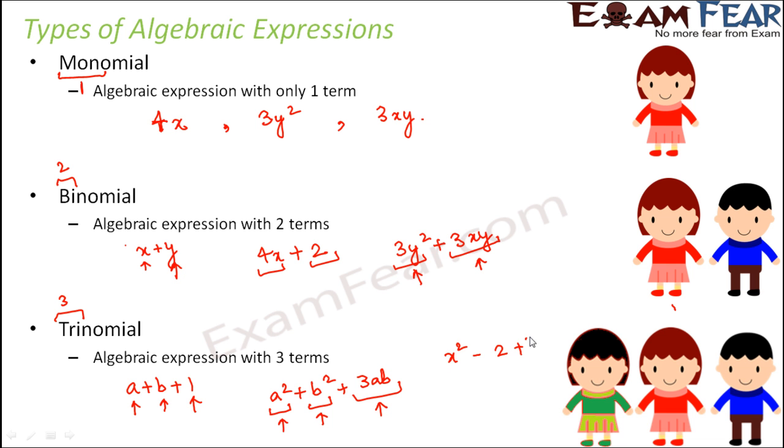Anything like x squared minus 2 plus 3y. So here again you have one term, two terms and three terms. So these are the three terms. So these are examples of trinomials.